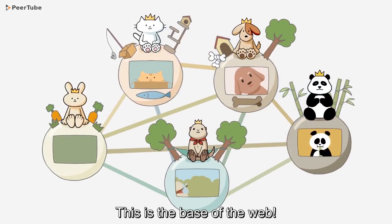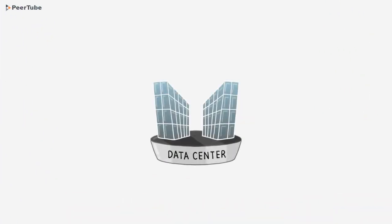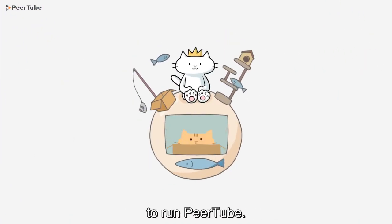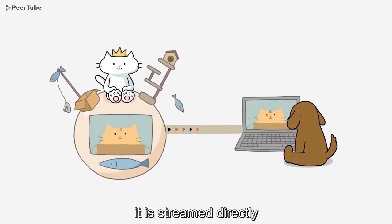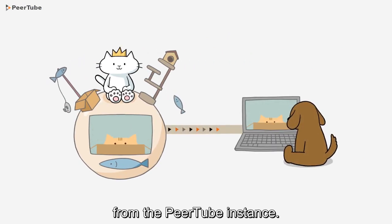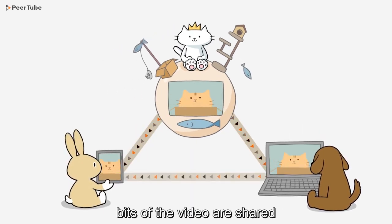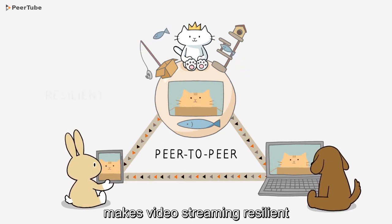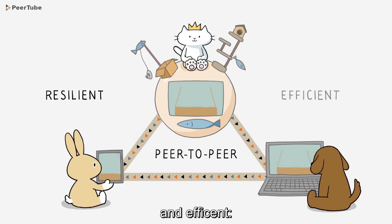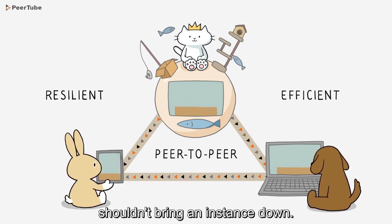This is the base of the web. Peer-to-peer streaming: you don't need a data center to run PeerTube. When someone watches a video, it is streamed directly from the PeerTube instance. When several people watch the same video simultaneously, bits of the video are shared between them in the background. Peer-to-peer streaming makes video streaming resilient and efficient — a successful video shouldn't bring an instance down.